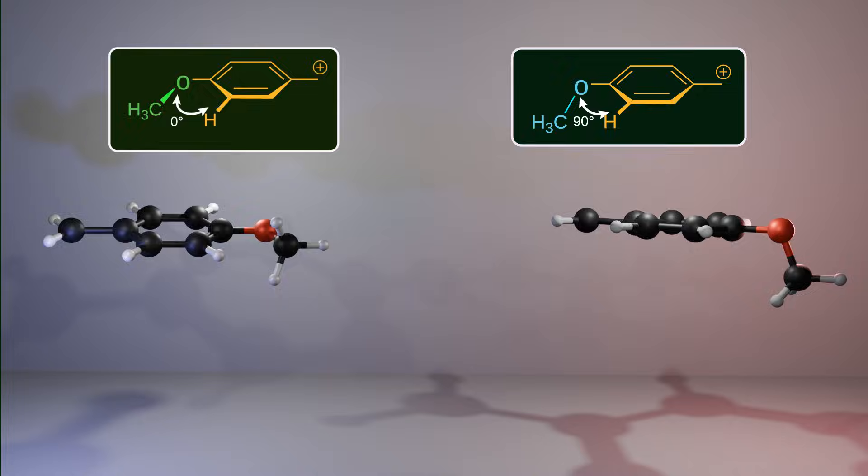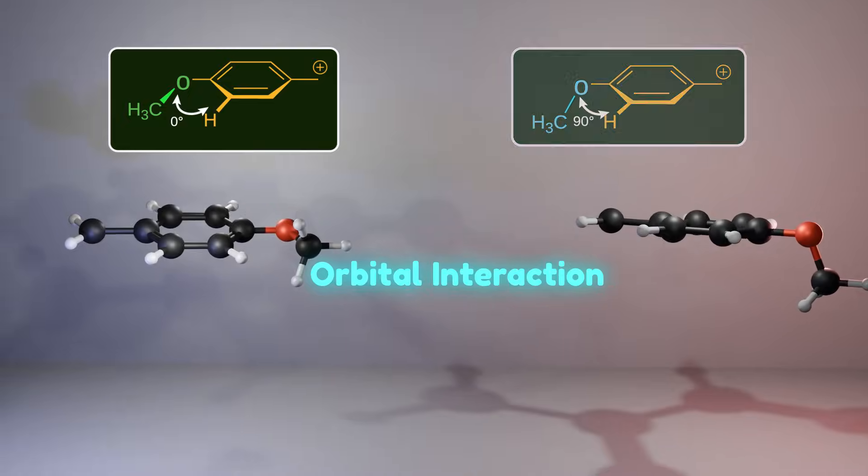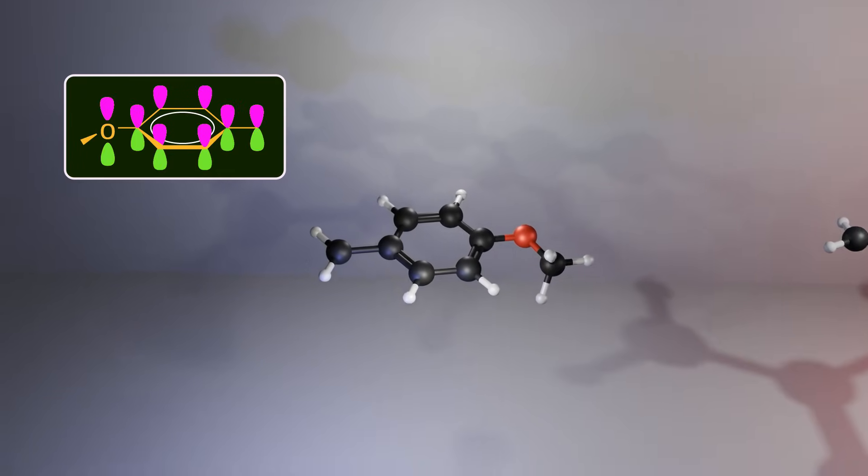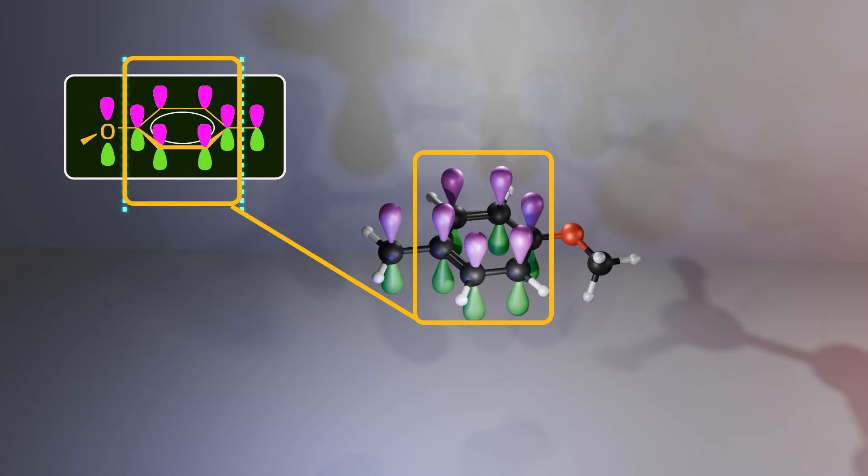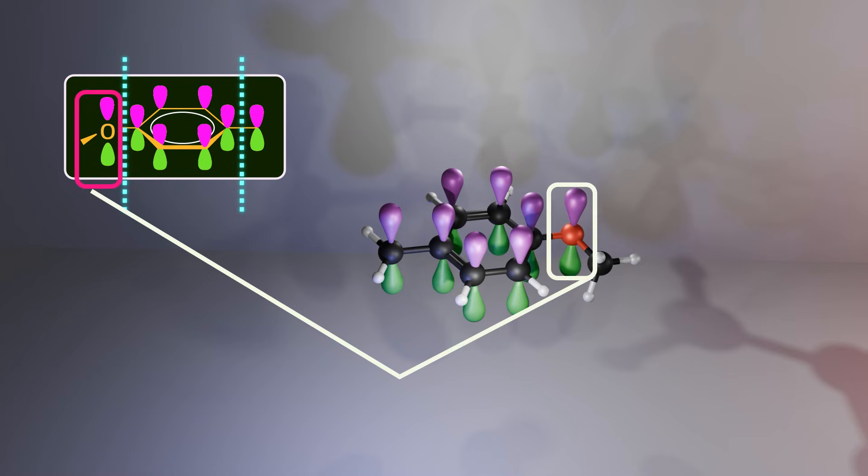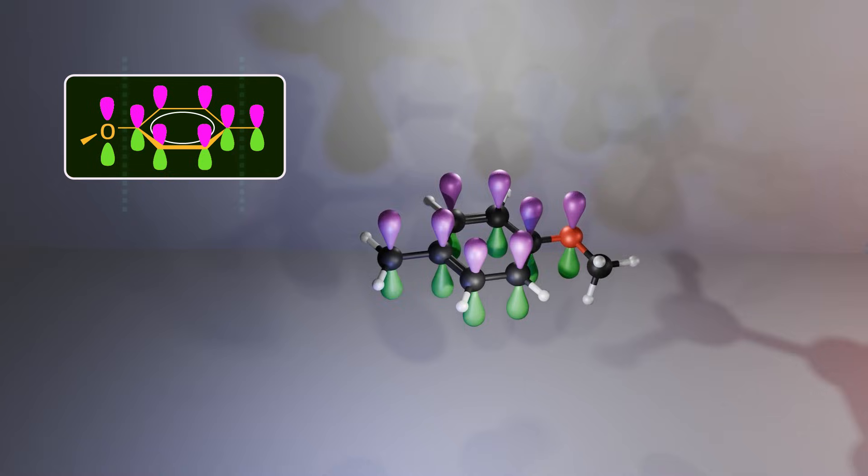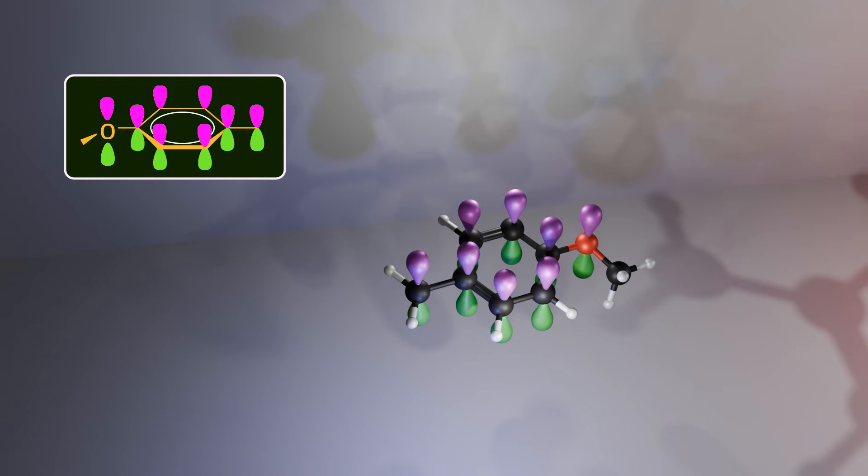In this compound, three types of orbital interact to give resonance. The first one is the empty p-orbital of the carbocation. The second is the conjugated p-orbital of the benzene ring. And third is the non-bonding orbital of the oxygen atom. As you see, all of these orbitals are coplanar and are in the same phase. So, the non-bonding electrons of the oxygen atom can stabilize the empty p-orbital of the benzylic carbocation by orbital interaction.